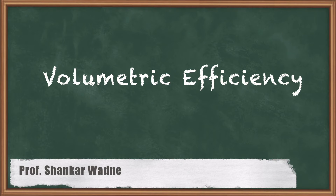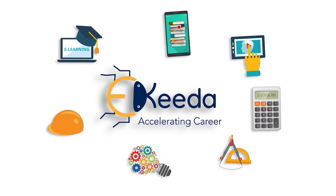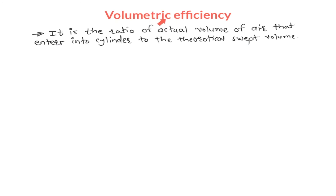Hello my dear students. In this lecture we are going to learn volumetric efficiency. Volumetric efficiency is defined as the ratio of actual volume of air that enters into the cylinder to the theoretical swept volume. It is written as: volumetric efficiency equals actual volume of air entering the cylinder divided by theoretical swept volume.